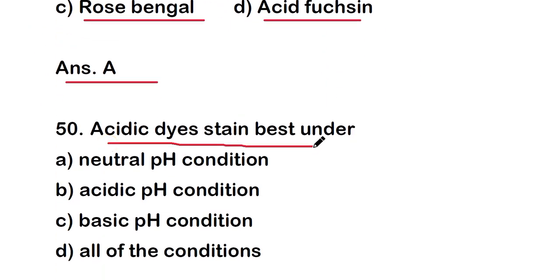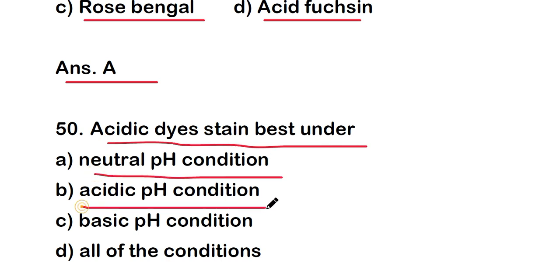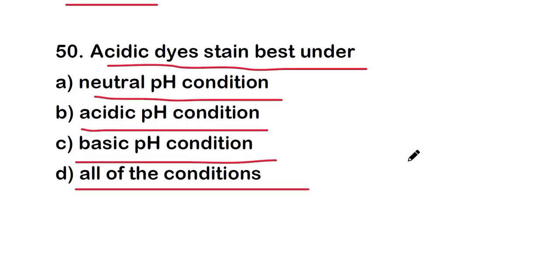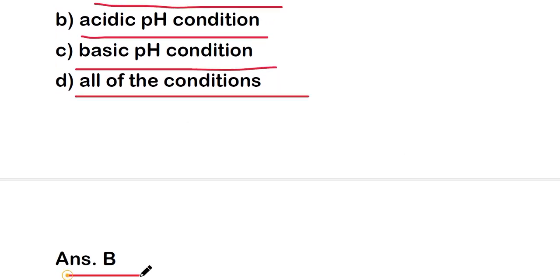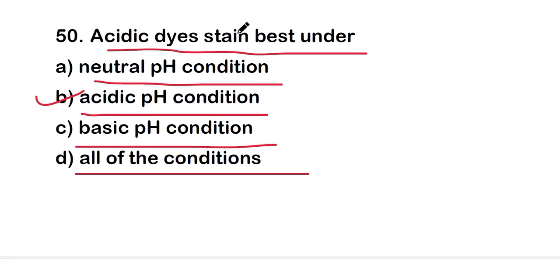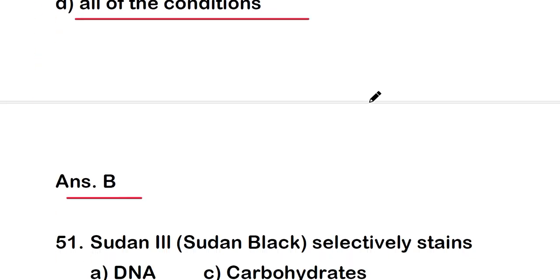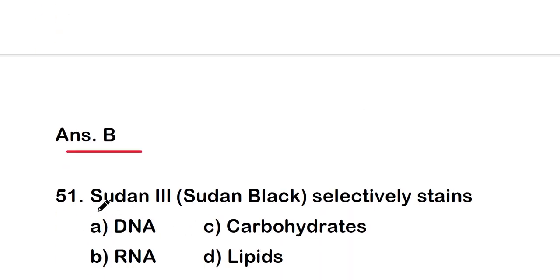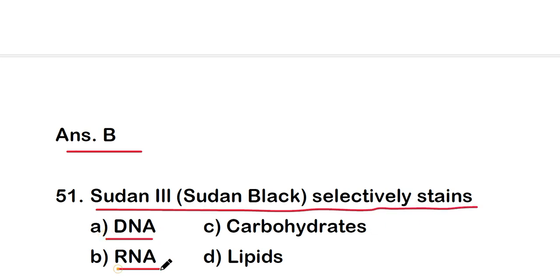Next question: acidic dye stains best under — neutral pH, acidic pH, basic pH, or all conditions? The right answer is option B — acidic dye stains best under acidic pH conditions.